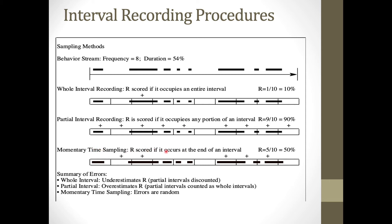The last method, momentary time sampling, scores the response only if it occurs at the end of the interval. Applying this to the same data stream, five out of ten intervals had bizarre speech — 50%. The estimation errors with momentary time sampling are more random in nature.